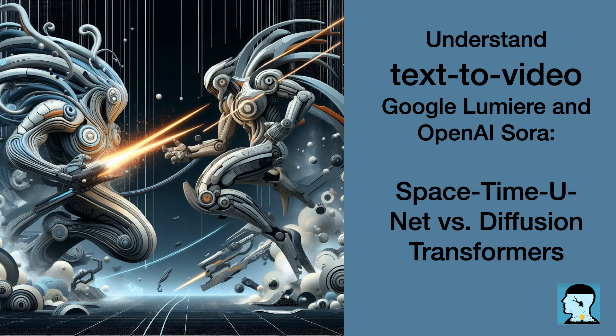How do the space-time unit framework used in Lumiere and the diffusion transformers employed in Sora contribute to the creation of high-quality videos from text prompts? What specific aspects of these mechanisms enhance the video generation process in each AI model? Space-time unit and diffusion transformers play crucial roles in enhancing the video generation process in Lumiere and Sora, respectively.